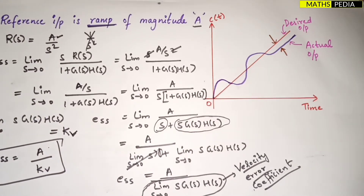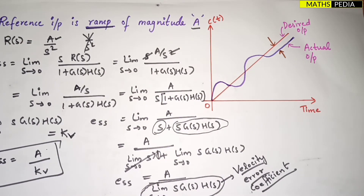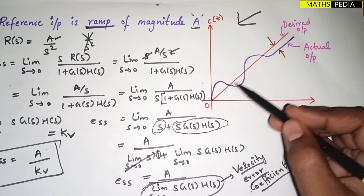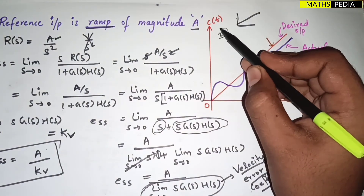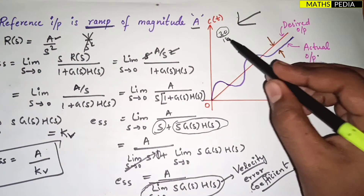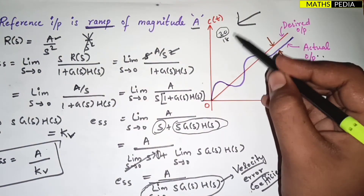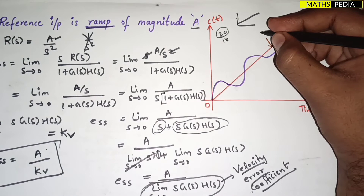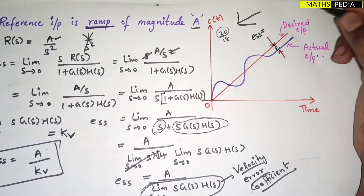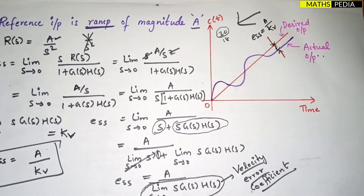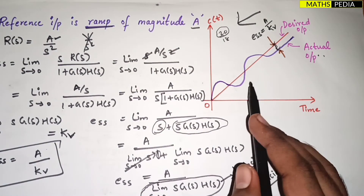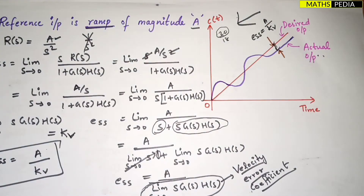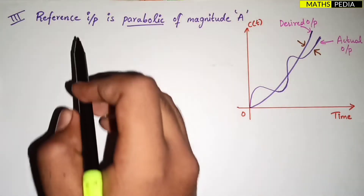Looking at the ramp graph: the red line is the desired output and the actual output has some error. If desired is 20 but you're getting 18, the error is there — you can see the gap on the graph. That error is the steady state error e_ss = a/Kv, where Kv is the velocity error coefficient.